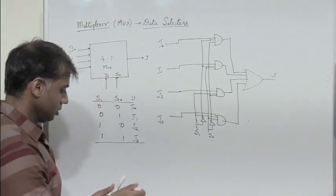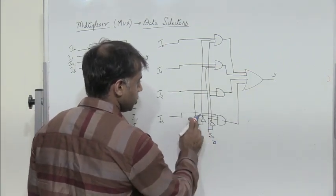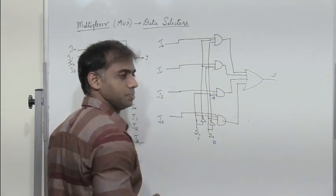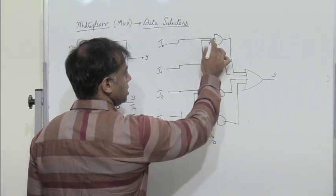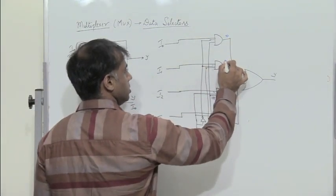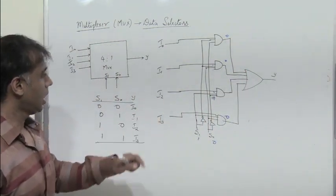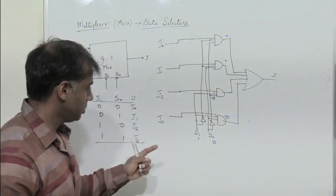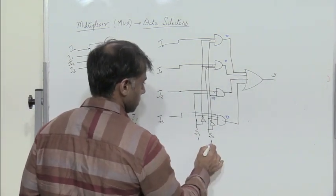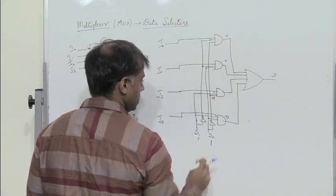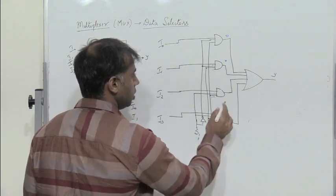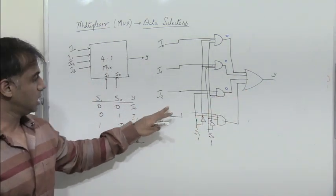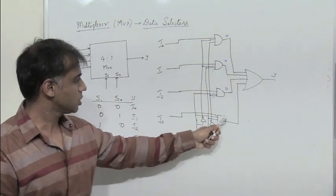When s1=1 and s0=0: s1 is directly connected giving 1, and the inversion of s0 also gives 1. The other AND gates have at least one input equal to 0, so output y depends on i2. When both s1=1 and s0=1: s1 and s0 are directly connected to the fourth AND gate. The outputs of the other three AND gates are 0, so output y depends on i3: if i3 is 0, y is 0; if i3 is 1, y is 1.